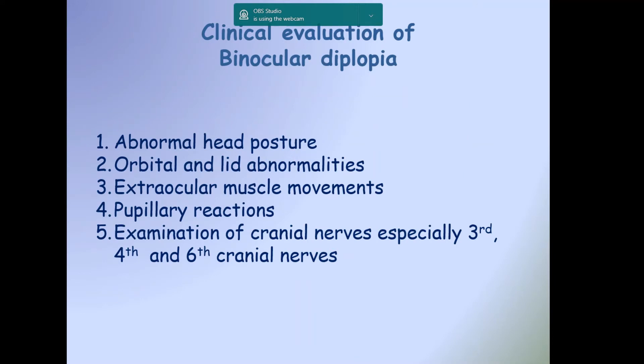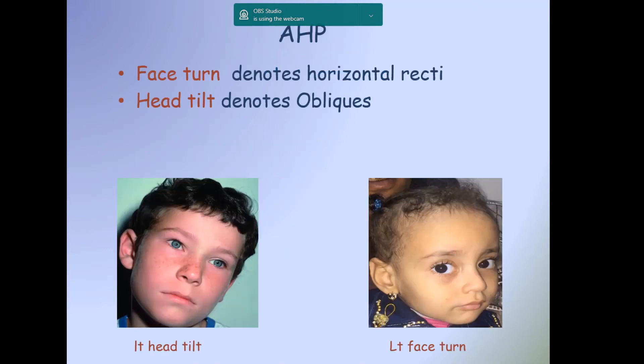Clinical evaluation of binocular diplopia: Most important is to search for abnormal head posture, orbital and eyelid abnormalities, extraocular muscle movements, pupillary reactions, and examination of cranial nerves, especially third, fourth, and sixth cranial nerves. Persistent abnormal head posture denotes paralysis either in horizontal or oblique muscles. The right photo shows left face turn denoting horizontal recti paralysis. The left photo shows left head tilt denoting oblique muscle paralysis.